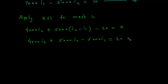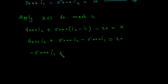Moving minus 20 to the right side gives positive 20. So the equation becomes: minus 5000 × I1 plus 9000 × I2 equals 20. This is equation number 2.